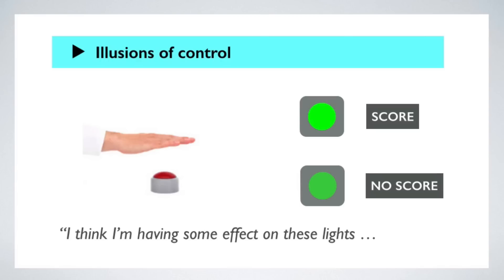The result is interesting. People have a range of judgments about how much control they have over the lights, but these judgments have almost no correlation with the actual control they have. What seems to anchor their judgment the most is how often the score light goes on. If it lights up frequently, they think they have more control over the sequence than if it lights up less frequently. So it seems like when one of the outcomes is conceptualized as a success outcome, our brains tend to fixate on it and come to think we have more control over success outcomes than other outcomes.